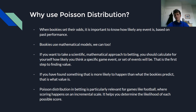If you have found something that is more likely to happen than what the bookmakers predict, then you've found value. So if you think there's a 50% chance of a team winning and the bookmaker is giving them only a 25% chance, then obviously you're going to take that price with the bookmaker. Poisson distribution is particularly relevant for games like football where scoring happens on an incremental scale, and that helps us determine the likelihood of each possible score.